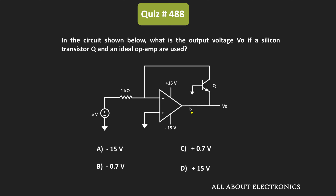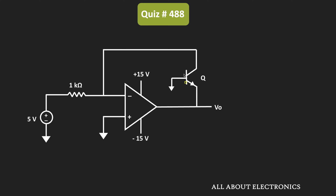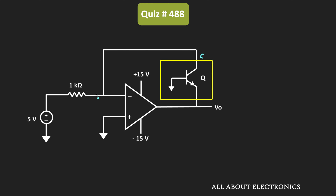We have been given that the op-amp is an ideal op-amp, and as you can see, a silicon transistor is connected in the feedback path of this op-amp. The given transistor is the NPN transistor. The collector terminal of the transistor is connected to the inverting terminal of the op-amp, while the emitter terminal is connected to the output terminal, and the base terminal is connected to the ground terminal.